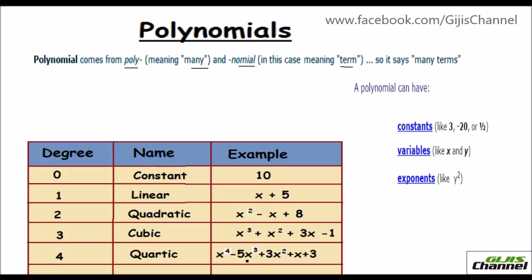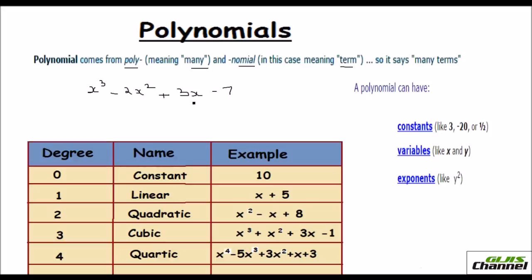For instance, you have a polynomial x cubed minus 2x squared plus 3x minus 7. The letters used are called variables. The numbers in front of the x terms are called coefficients. A polynomial consists of variables and coefficients with addition, subtraction, and multiplication operations in between.